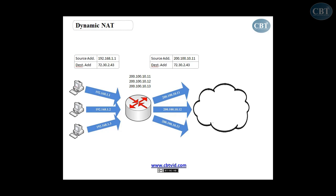For example, when this computer wants to send the packet out to a server outside — let's say the address of this server is 172.30.2.43 — when a computer sends a packet out, the source address is 192.168.1.1. When the packet comes to the router, the router has a pool of public IP addresses. You have to configure a pool. Your organization has bought so many public IP addresses. In this case, we have three different public IP addresses.